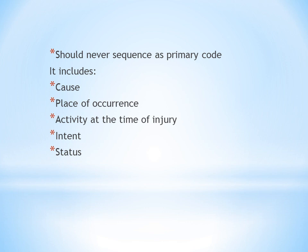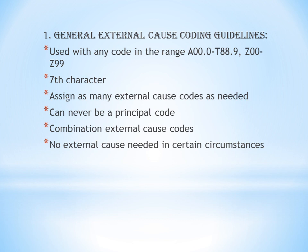External cause codes include: cause, place of occurrence, activity at the time of injury, and intent and status. Now I'll discuss each one. First: General External Cause Coding Guidelines. These codes can be used with any code in the range A00.0 to T88.9 or Z00 to Z99 — that is, alongside any other injury or health condition code. 'Cause' means how the injury or condition occurred.